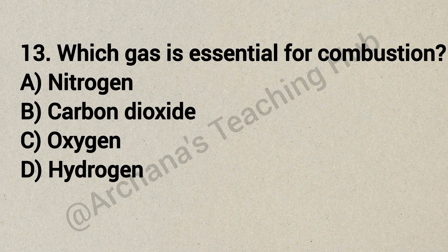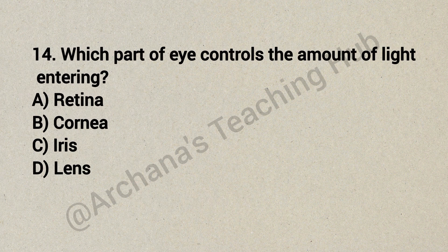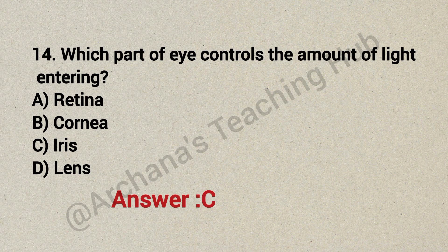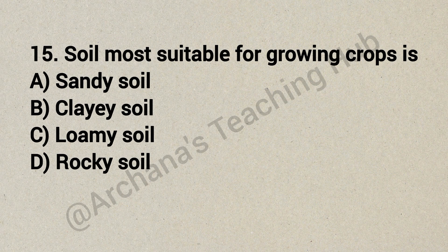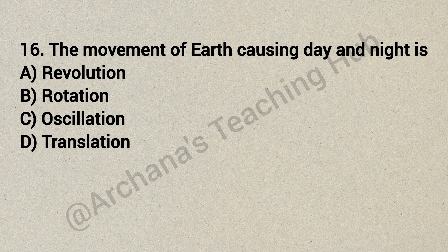Question 13: Which gas is essential for combustion? Option A: nitrogen, Option B: carbon dioxide, Option C: oxygen, Option D: hydrogen. Correct answer is Option C: oxygen. Question 14: Which part of the eye controls the amount of light entering? Option A: retina, Option B: cornea, Option C: iris, Option D: lens. Correct answer is Option C: iris. Question 15: Soil most suitable for growing crops is — Option A: sandy soil, Option B: clayey soil, Option C: loamy soil, Option D: rocky soil. Correct answer is Option C: loamy soil.